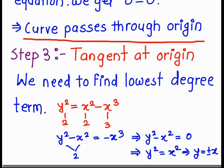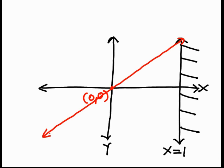In step number 3, we find tangent at origin. So here we get y equal to plus or minus x as a tangent at origin. So from step 3, first tangent, y equal to x and at this particular point, the behavior of the curve is like this.